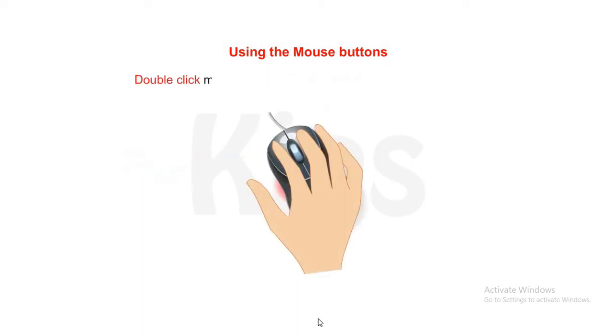Double click means pressing the left mouse button twice quickly. This makes two click sounds and opens an item. Double click, click click.